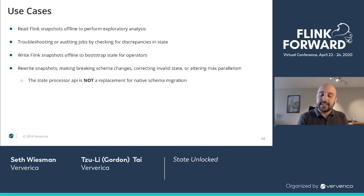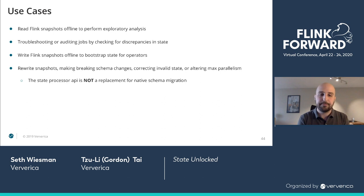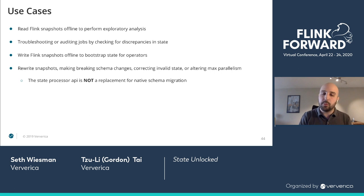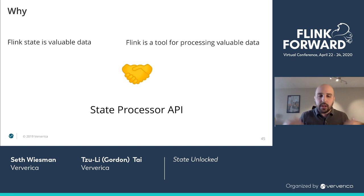It also allows us to alter our max parallelism. Max parallelism is hard-coded into your save point for a number of reasons, and it cannot be altered unless you use the State Processor API, in which case you can rewrite your save point to have a higher max parallelism. But I want to reiterate: this is not a replacement for native schema migration. You should always reach for that first. In your new Flink jobs, use POJOs, use Avro, use something that is just going to work — otherwise this will be way more work than you want to put in.